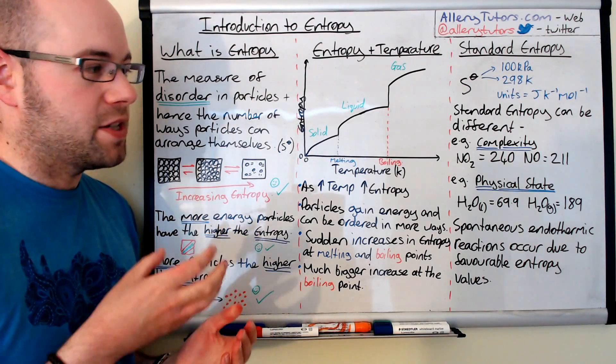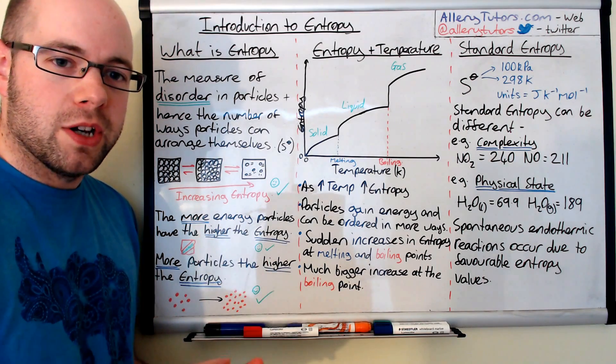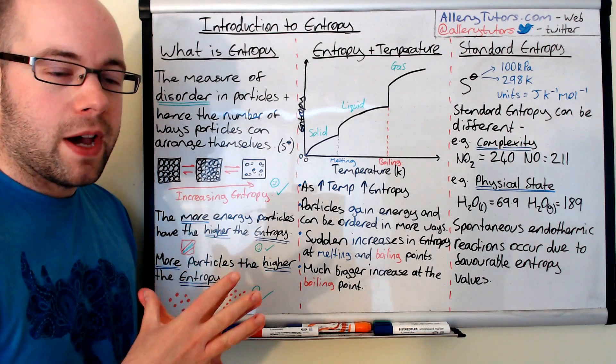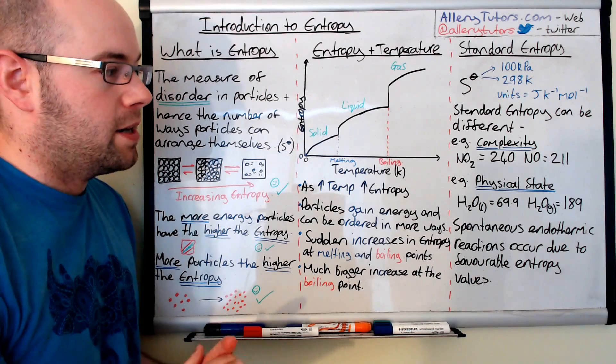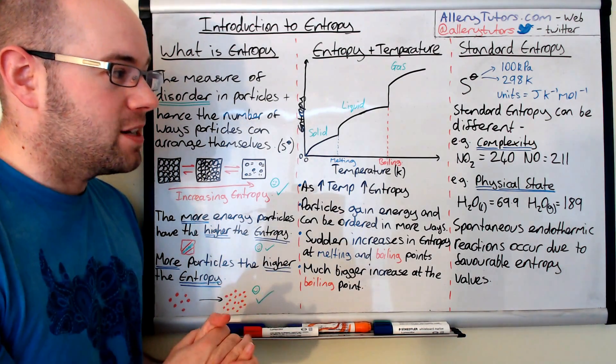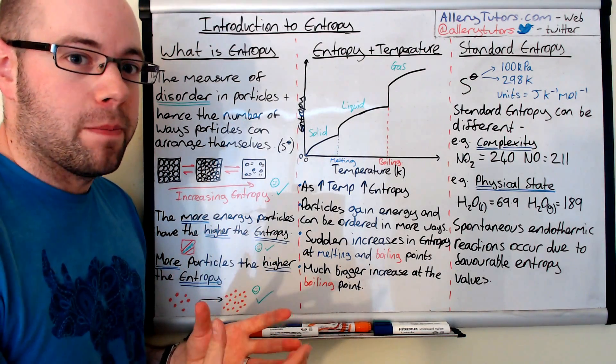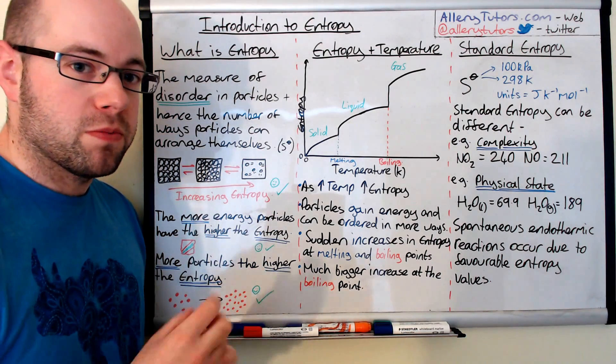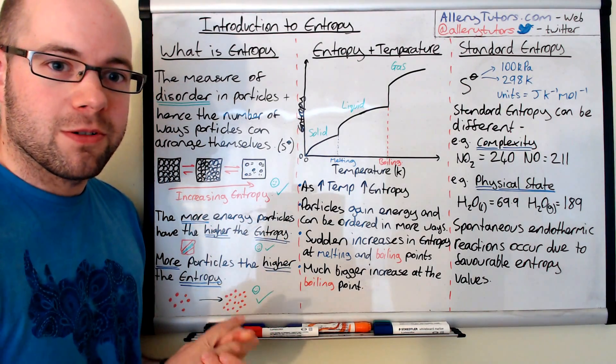The other thing, not surprisingly, is the physical state. Maybe this is a little bit more obvious. For example, if we have the same molecule—in this case we're going to use H2O—if we have liquid water, this gives us an entropy value of 69.9 joules per Kelvin per mole. But if we take gaseous water, which is steam, that's got an entropy value of 189. That value is a lot bigger. That's because a gas can arrange itself a lot more. There's more ways in which the particles can arrange themselves, so the entropy is obviously going to be a little bit higher.